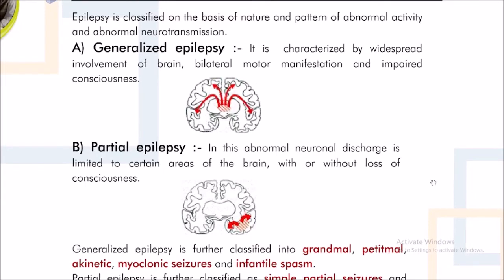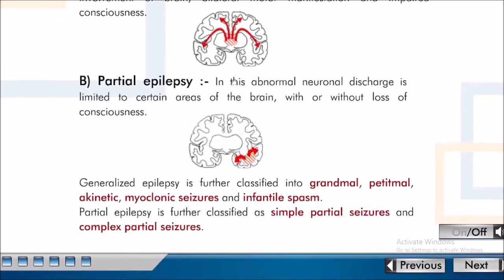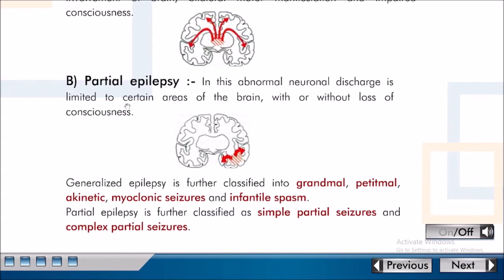Epilepsy is classified on the basis of the nature and pattern of abnormal activity and abnormal neurotransmission. Generalized Epilepsy is characterized by widespread involvement of the brain, bilateral motor manifestation, and impaired consciousness. In Partial Epilepsy, abnormal neuronal discharge is limited to certain areas of the brain, with or without loss of consciousness.